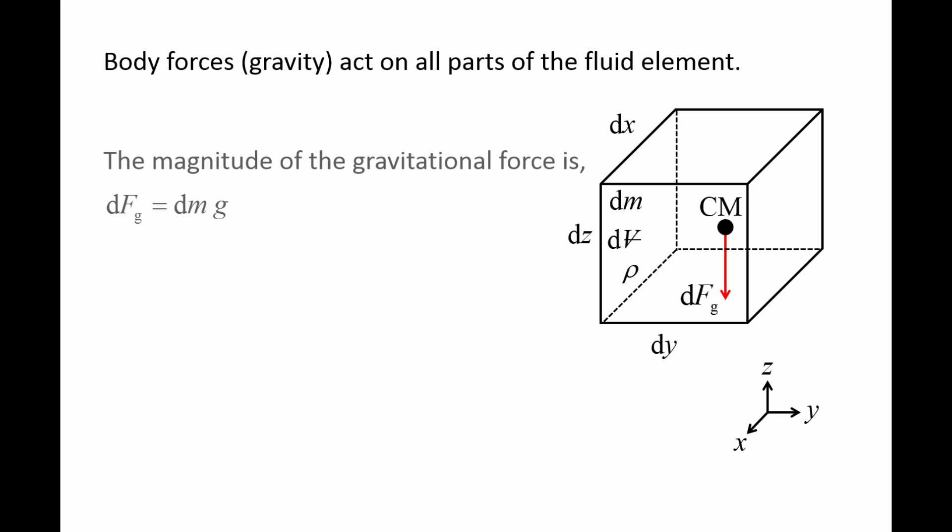The magnitude of the gravitational force is the mass dm times the gravitational acceleration g. The mass dm is equal to the density times the volume.